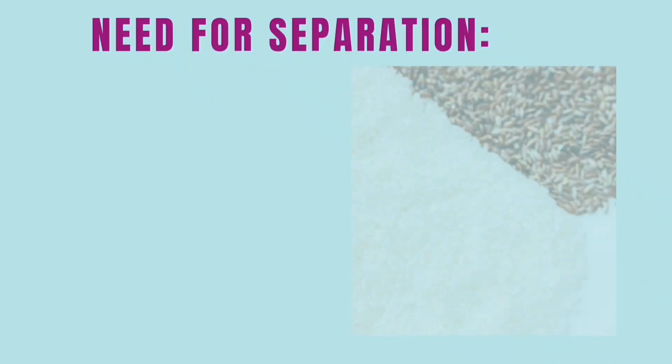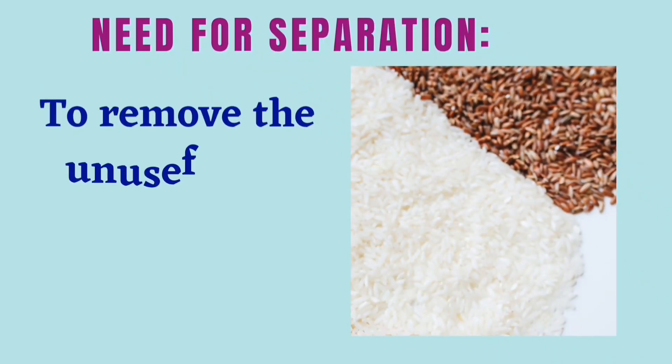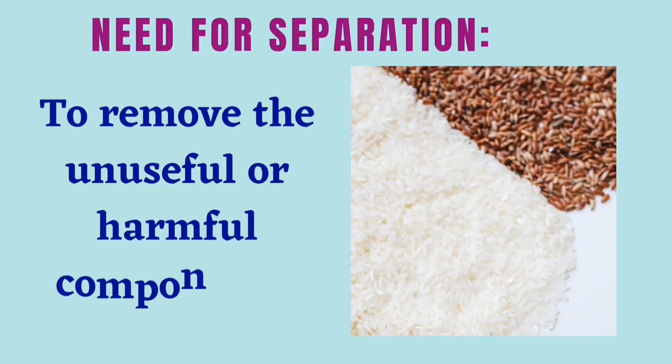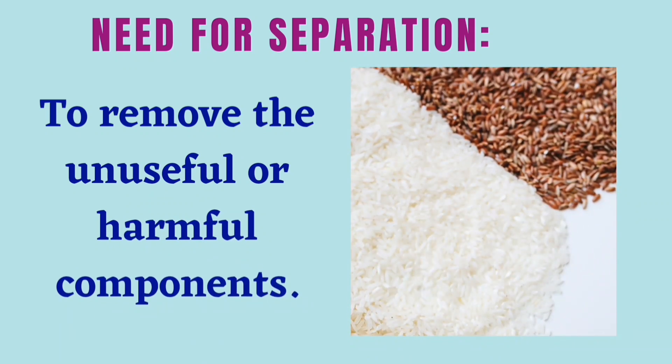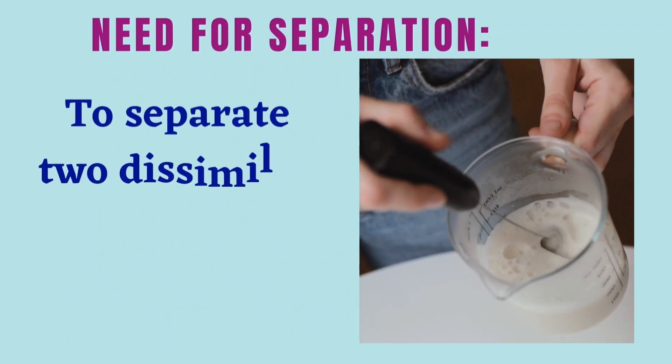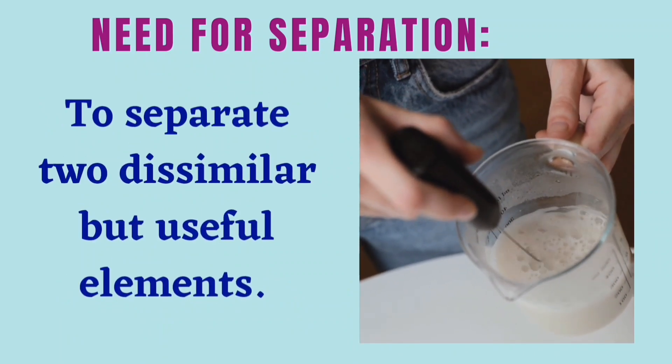Before we use a substance, we need to separate harmful or non-useful substances that may be mixed with it, like stones separated from rice. Sometimes we separate even useful components if we need to use them separately, like butter from milk.